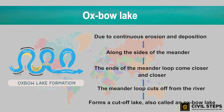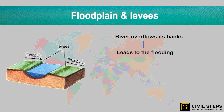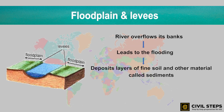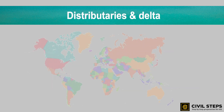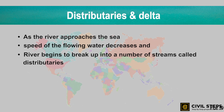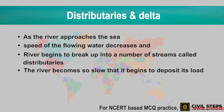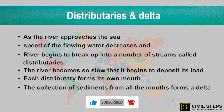At times the river overflows its banks, leading to flooding of neighboring areas. As it floods, it deposits layers of fine soil and other material called sediments along its banks, leading to the formation of a flat, fertile flood plain, and these raised banks are called levees. As the river approaches the sea, the speed of the flowing water decreases and the river breaks up into a number of streams called distributaries. The river slows so much that it begins to deposit its load, and each distributary forms its own mouth. The collection of sediments from all the mouths forms a delta.